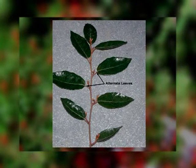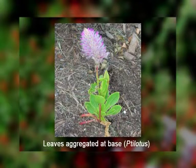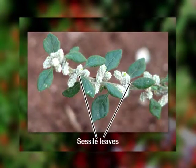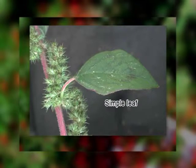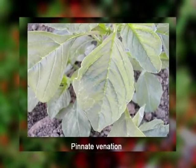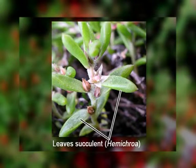The leaves in Amaranthaceae are usually alternate but they show a spiral arrangement, or rarely we see opposite arrangement of leaves. Sometimes these leaves are aggregated at the base of the plant body — example is Tilotus. The leaves are commonly exstipulate, that means without stipules, but leaves are with petiolate or sessile condition. The leaf blade is simple and leaf margins are entire to undulate, sometimes serrate or lobed. The leaves show pinnate venation but veins are often obscure. The leaves are also succulent in some taxa, for example Hemicroa, or in some taxa the leaves can be completely reduced.